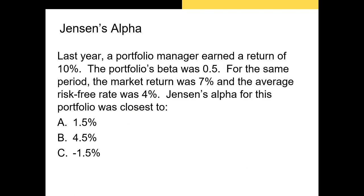Let's try an example. In this example, a portfolio manager earned a return of 10%. The portfolio's beta is 0.5, and for the same period the market return was 7% and the average risk-free rate was 4%. Jensen's alpha for this portfolio was closest to — and we have some choices. Let's find out what Jensen's alpha was for this portfolio over this period of time.